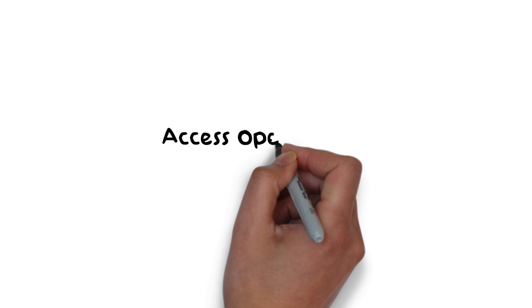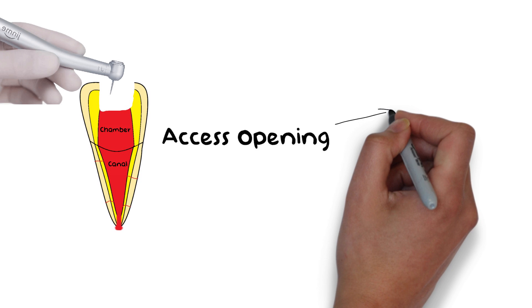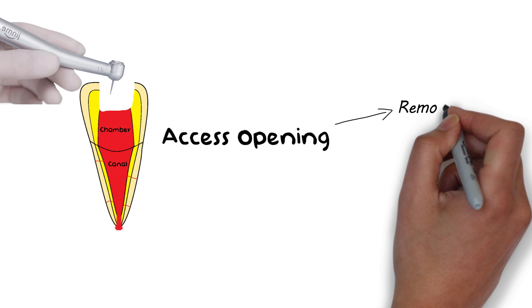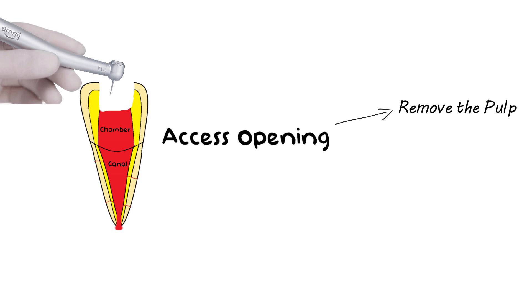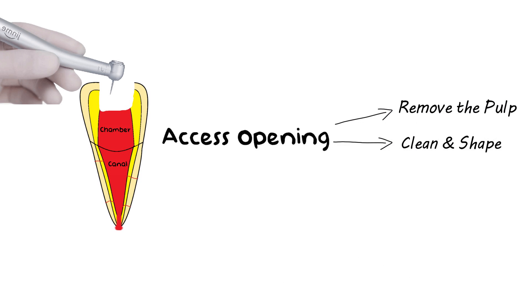Access opening, also known as chamber opening or gaining access to the chamber after isolation, is the first step of the root canal process in which the tooth is drilled up to the chamber roof and an access is created to the chamber and the canals of the root, in order to remove the pulp, clean and shape the canals, and to restore the tooth.